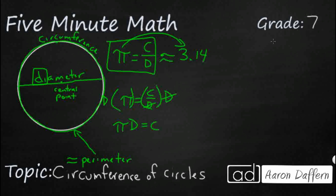In this particular instance, say they give us a problem where the diameter equals 18 inches. If you want to know what the circumference equals, you simply plug that 18 inches in: 3.14 times 18. If you wanted to estimate it, you can round 3.14 to 3 and say that's going to be about 54. Obviously we can pull out the calculator to do the actual calculation.